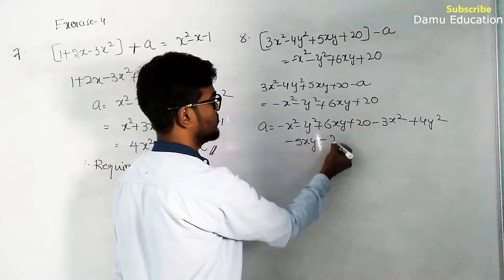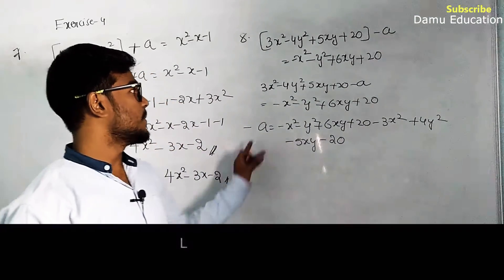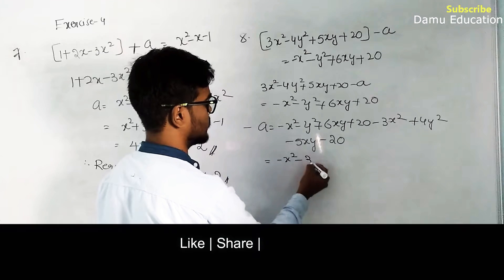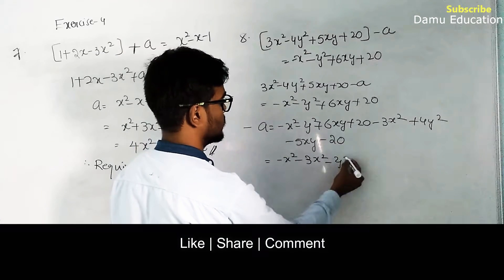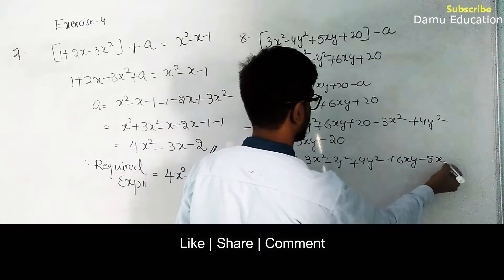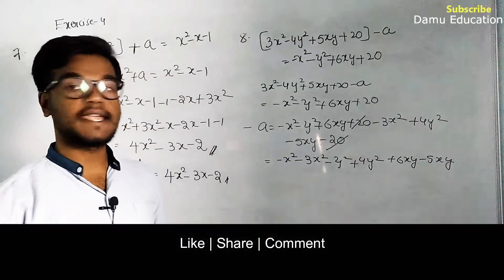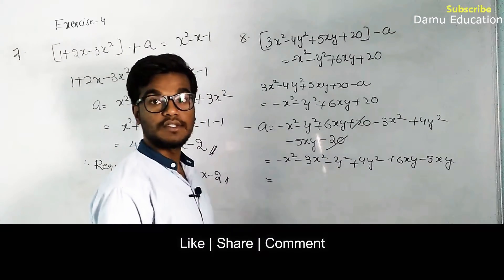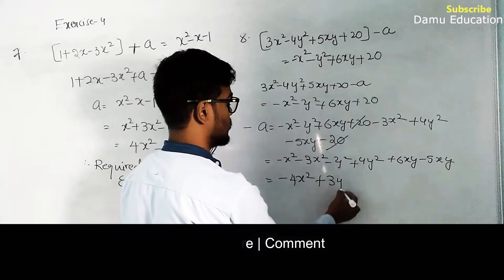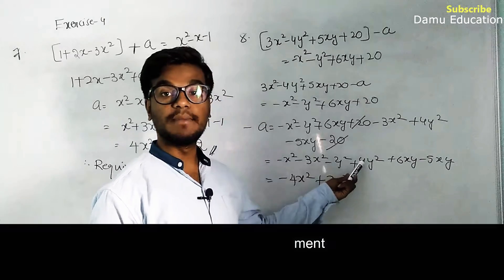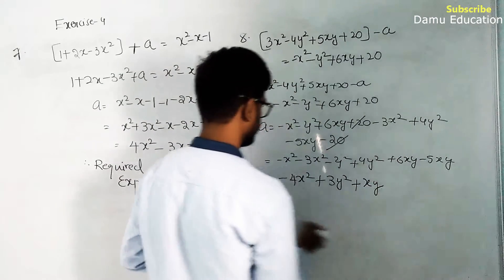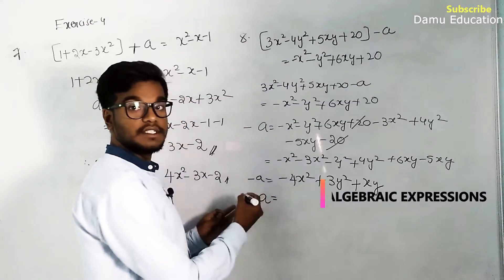So combining: -x² and 3x² gives us terms in x², -y² and +4y² gives +3y², then 6xy - 5xy gives +xy, and the +20 - 20 terms cancel out. So a equals -4x² + 3y² + xy. Since -a is on the left side, we multiply both sides by -1.